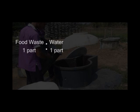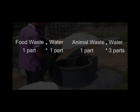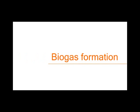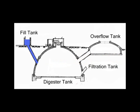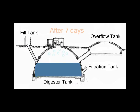The mixture of 1 part food waste and 1 part water, and the mixture of 1 part animal waste and 3 parts water, can be combined to attain 8,000 kg of waste. After filling the waste into the fill tank for the first time, wait 7 days for gas to form. During this time, anaerobic digestion will take place, creating the useful biogas.